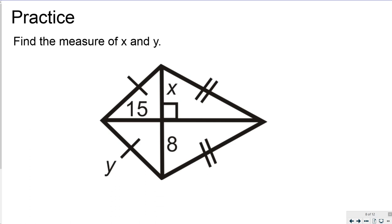So let's practice. Find the measure of x and y. So y is a given side length or an unknown side length here. x is the distance from the center point to this vertex over here. So if I just drop some like A, B, C, and D, just to label some of the endpoints of the kite.